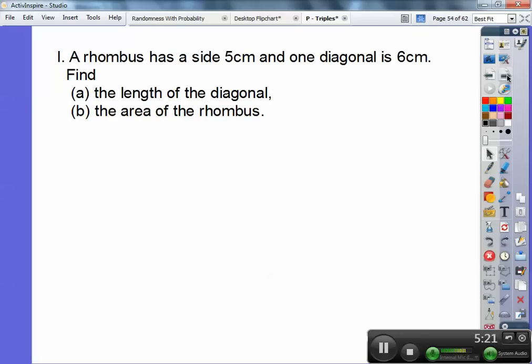Okay, there's one more and we'll just stop after this. You've got a rhombus. A rhombus has sides 5 centimeters and one diagonal 6 centimeters. Find the length of the other diagonal and the area of the rhombus.